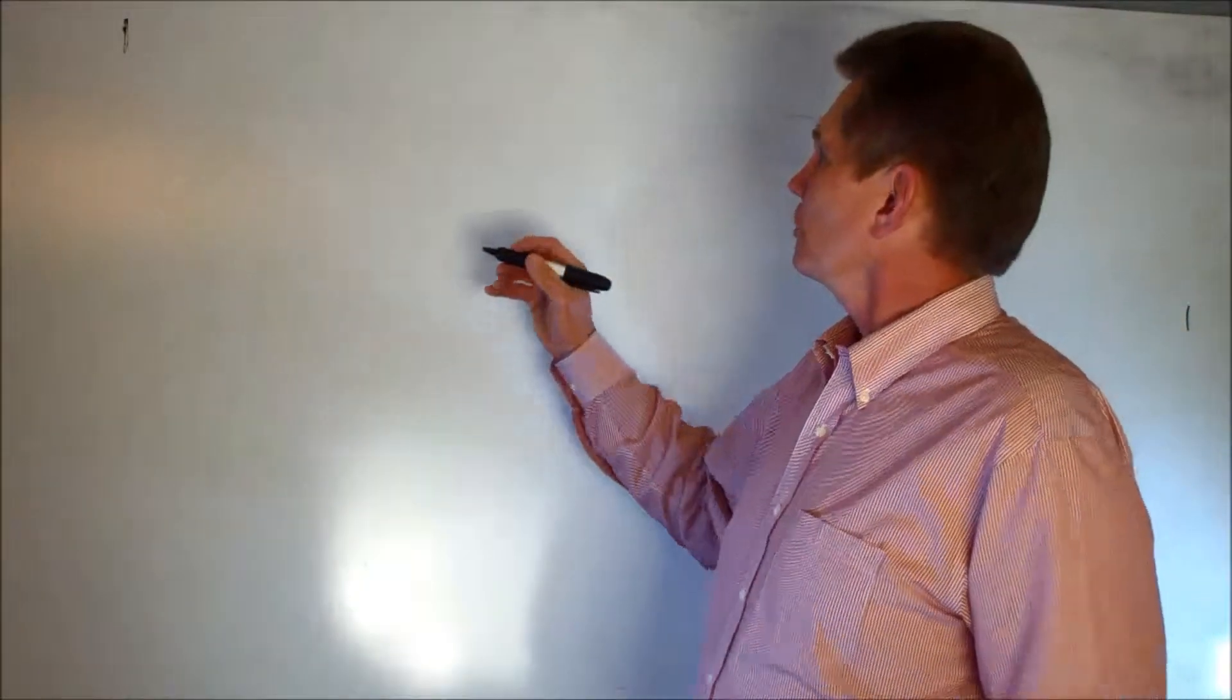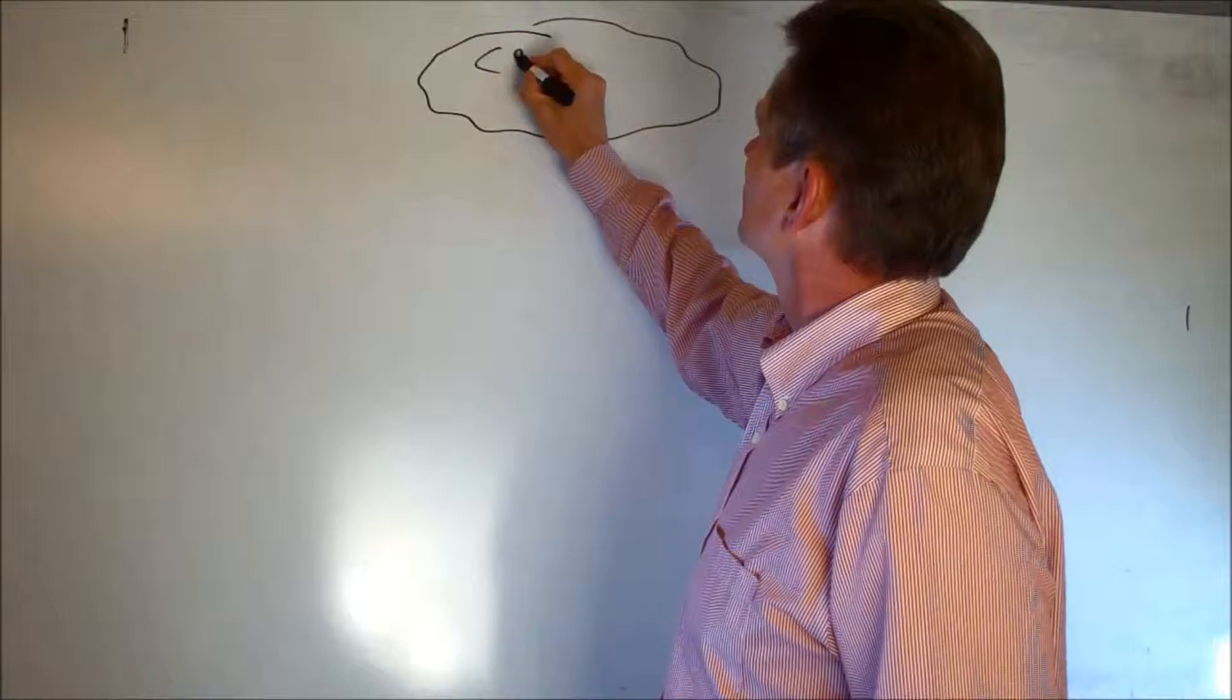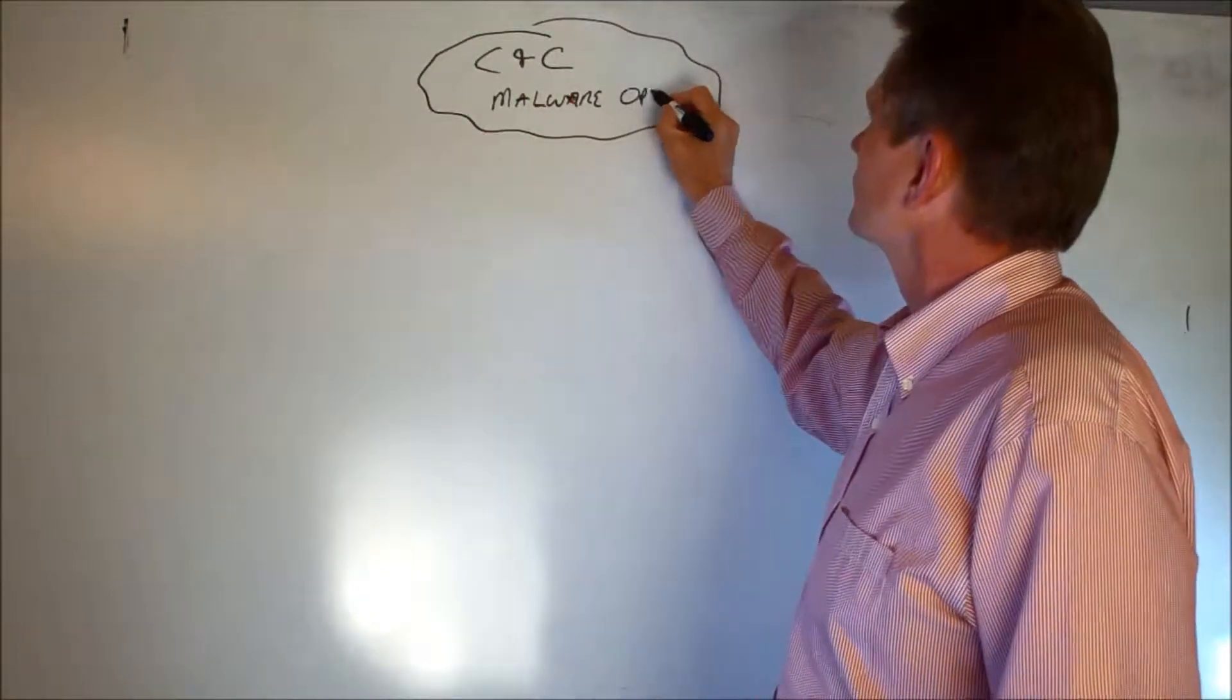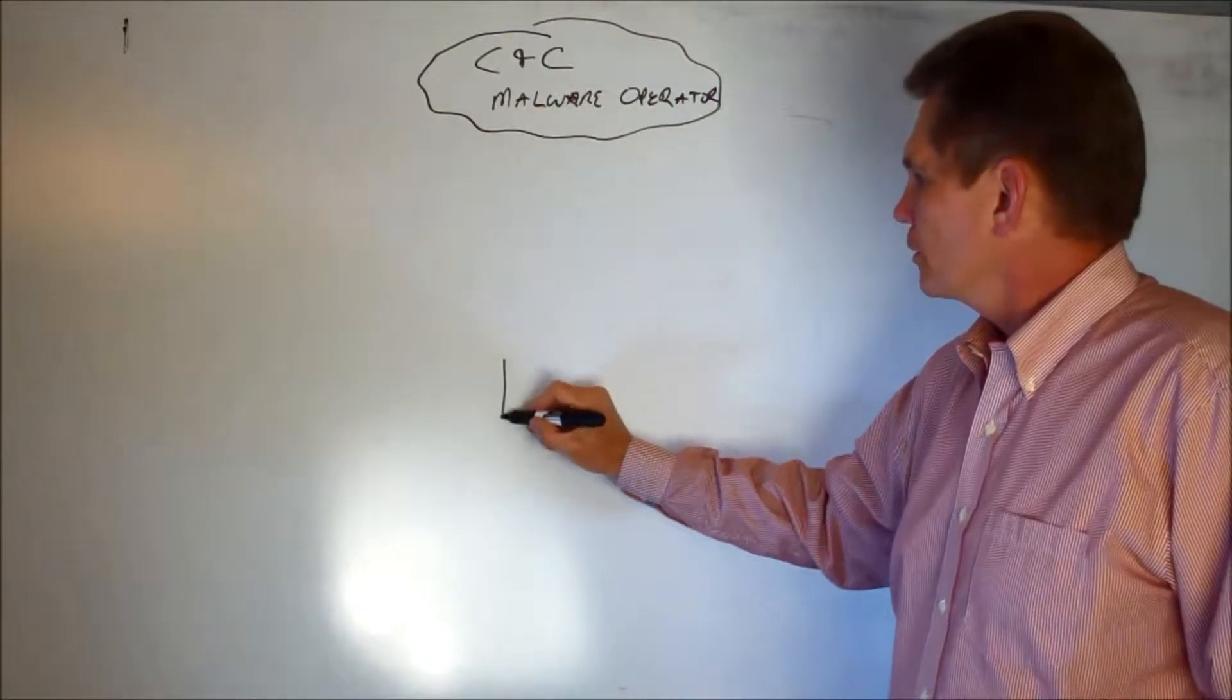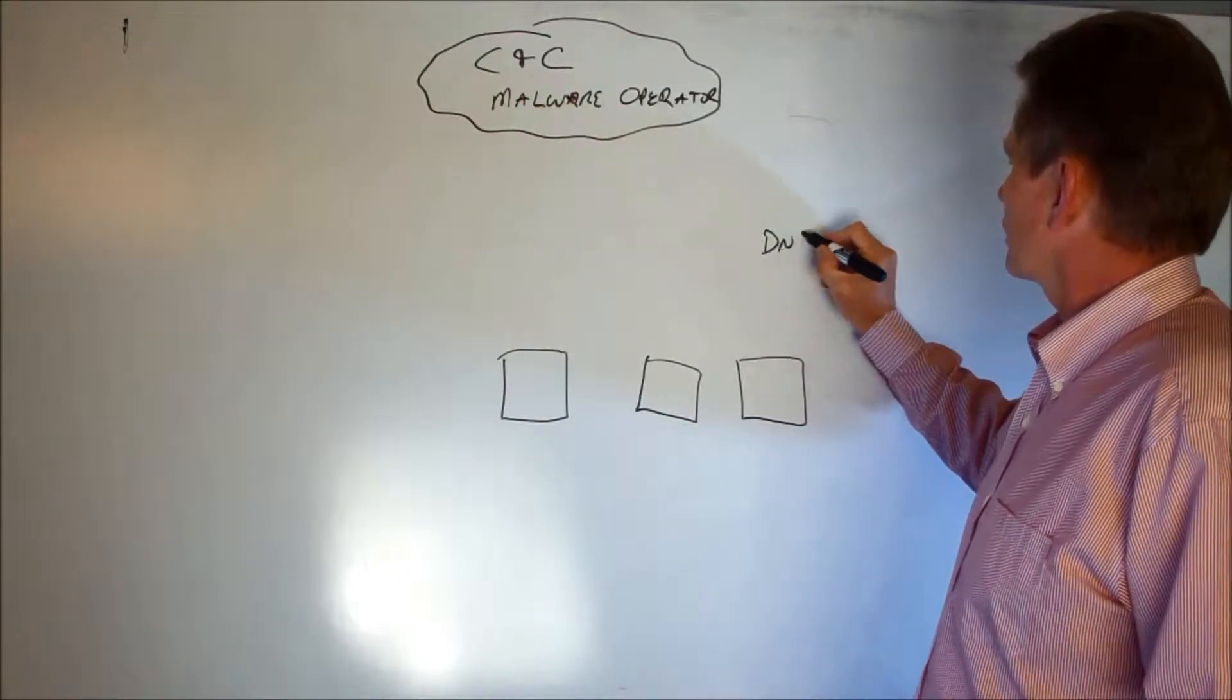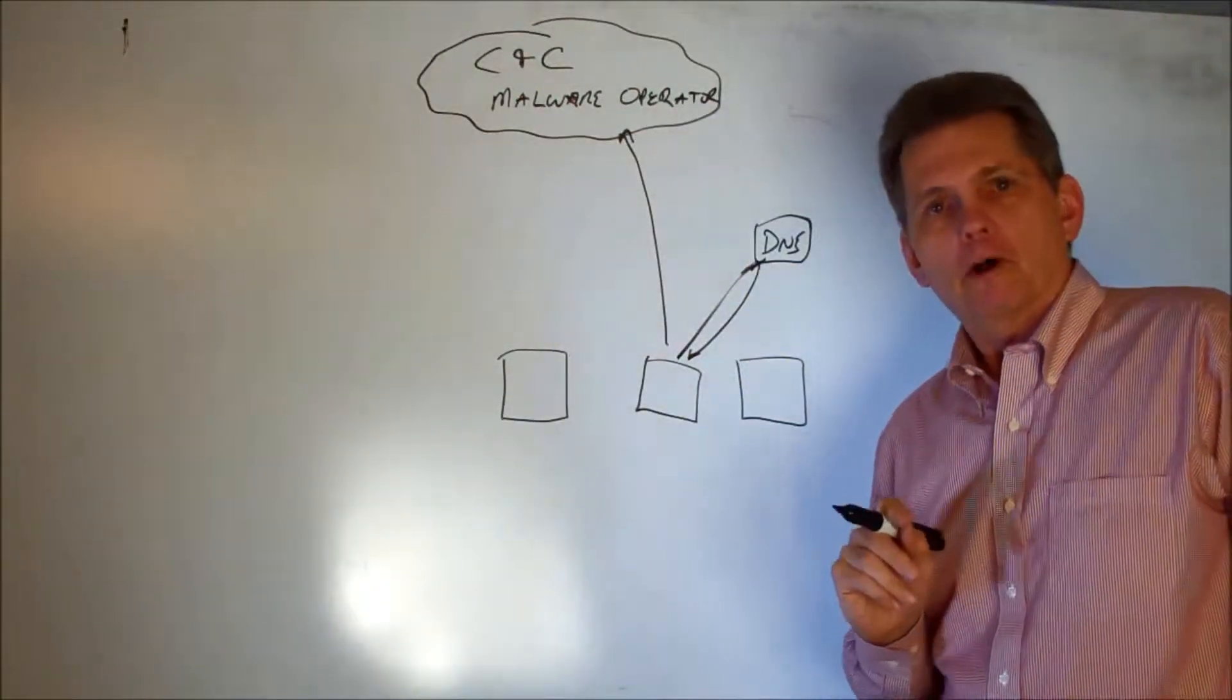So traditional malware typically talks back to a centralized command and control cloud that's run by the malware operator. And you have a victim or a set of victims that are out here in the world that access that cloud through a DNS server. They will request an IP address from the DNS server, get the IP address back, and talk back to the malware operator.